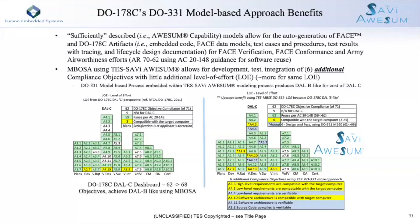The tool generates more than the FACE data models, but it allows for that efficiency to generate the embedded code, the test cases and procedures, etc. When you're looking at the dashboard below, you're getting a lot of these objective compliances generated through the use of the tool. Additionally, since we have the green versus yellow, we now have the opportunity for reuse per the reuse guidance AC 21-48. The model-based open system architecture used in the SAVI tool allows for the development, test, and integration of six additional compliance objectives with little additional level of effort. Essentially, you're getting B-like design and testing for C-like levels of effort.